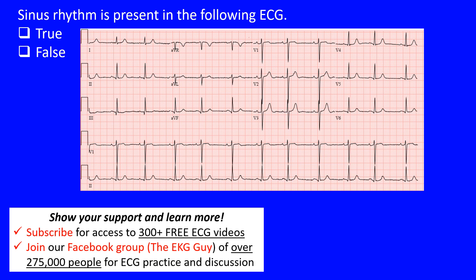Identifying sinus rhythm is very important. Let's go over the conduction system using our box diagrams. We have the right atrium, left atrium, right ventricle, and left ventricle. The conduction system starts in the sinus node, travels down the internodal pathway to the AV node, then through the His bundle, which splits into the right bundle branch and left bundle branch — subdividing into the left anterior and posterior fascicles.